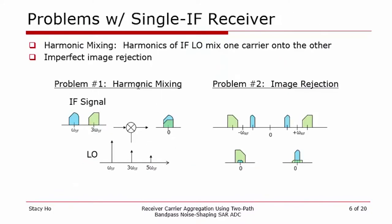There are two significant problems with this single-path single-IF receiver. The first problem is harmonic mixing, whereby harmonics of the IF LO will mix one carrier onto the other. The third harmonic of the LO can mix the carrier at three times IF onto the desired carrier. The second problem is that of imperfect image rejection — quadrature mismatch will result in image leakage, as shown on the right.